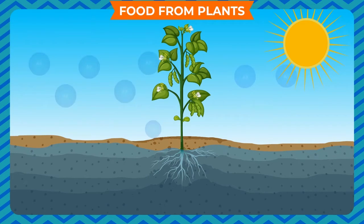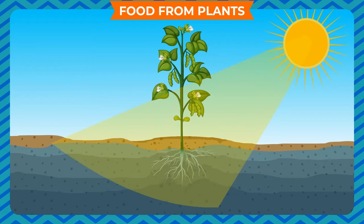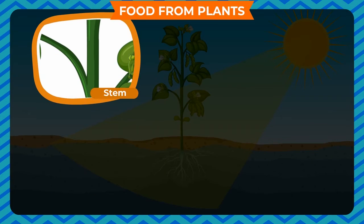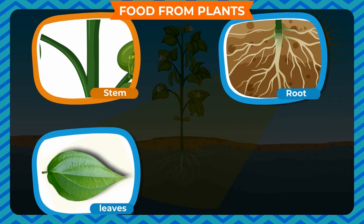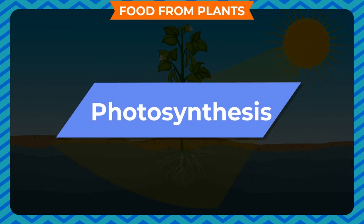Green plants make their food from atmospheric carbon dioxide and water in the presence of sunlight. They produce more food than they need and store extra food in different parts of the plant body like stem, root, leaves, and fruits. The process of making food by plants is called photosynthesis.